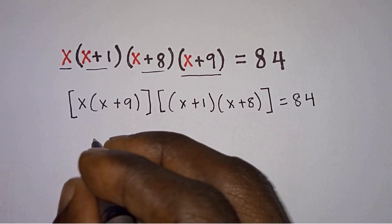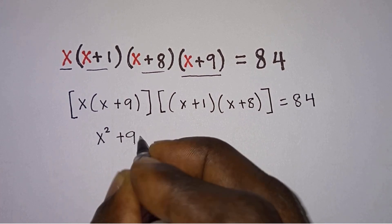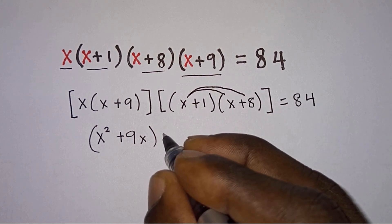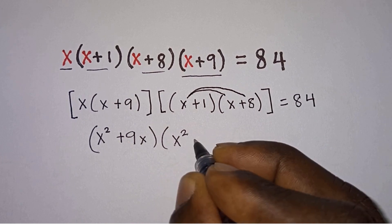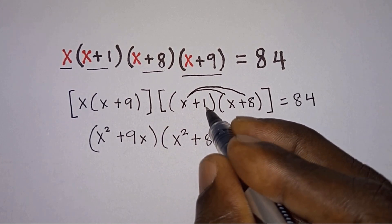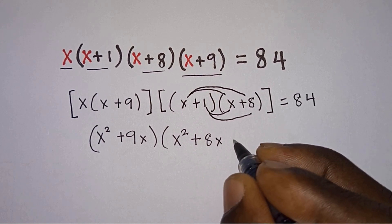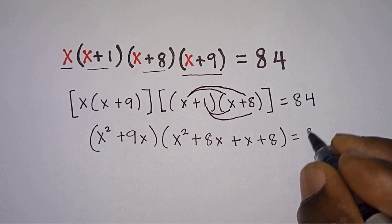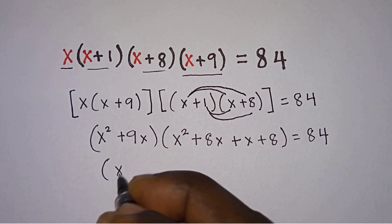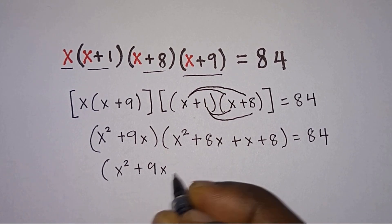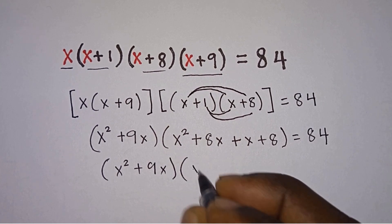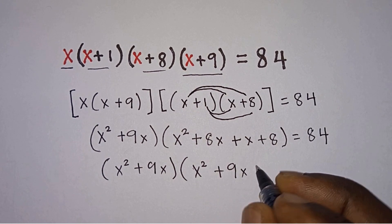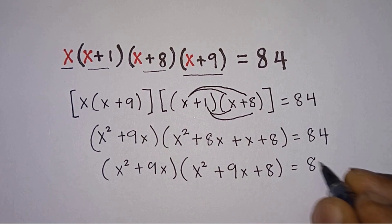From this first parenthesis we're going to have x squared plus 9x. Then from here we will use the FOIL method to multiply, so we're going to have x squared plus 8x, then distributing further we get plus x plus 8, and this is equal to 84. Keeping the first factor, we have x squared plus 9x times x squared plus 9x, then plus 8, equal to 84.